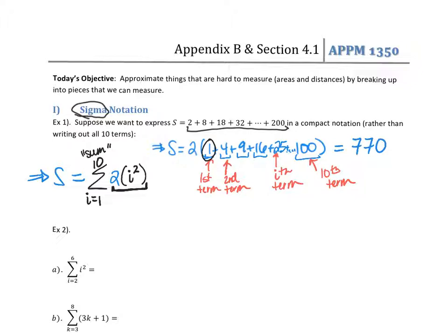This notation still doesn't tell us how to add it up — I still had to write out all 10 terms to actually get 770. We're going to learn a trick later to help with that. For right now, this is just a shorthand way for me to express this sum.